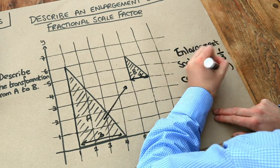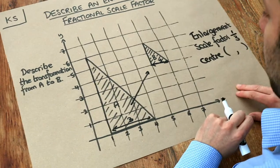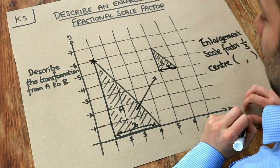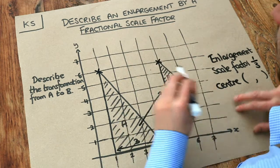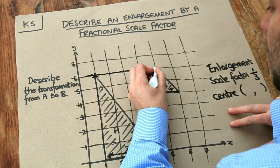The centre of enlargement we specify as a coordinate. Remember that coordinates have brackets around them. Now what we did before is we identified a point on the original shape and the equivalent point on the image, and then we drew a line between those two points and we keep going.